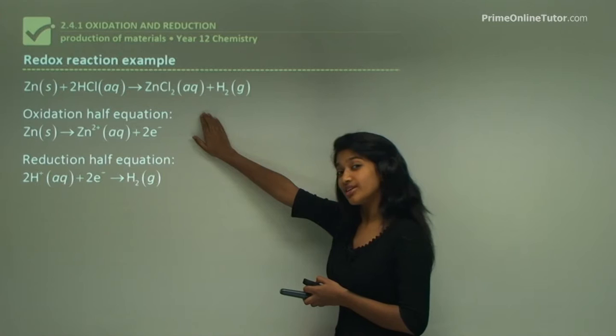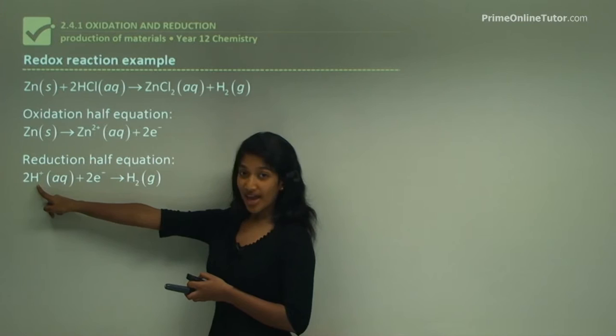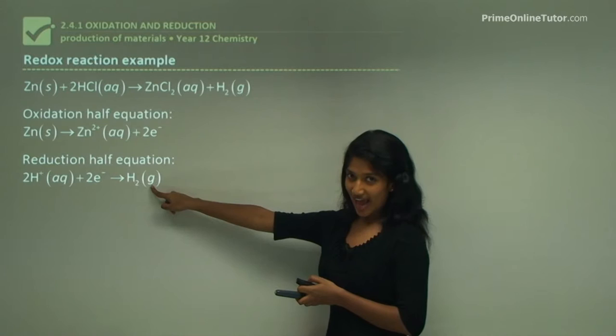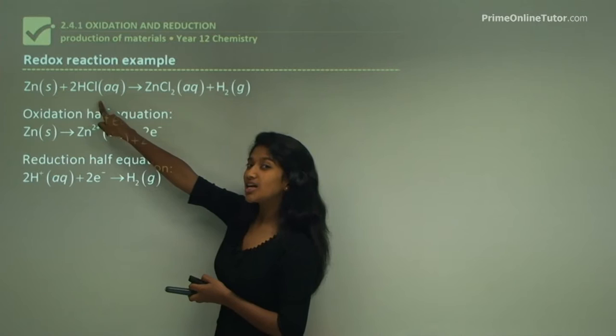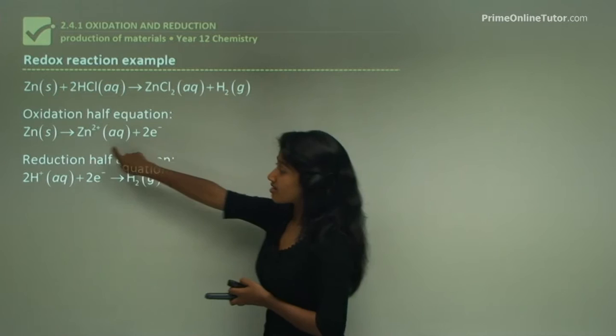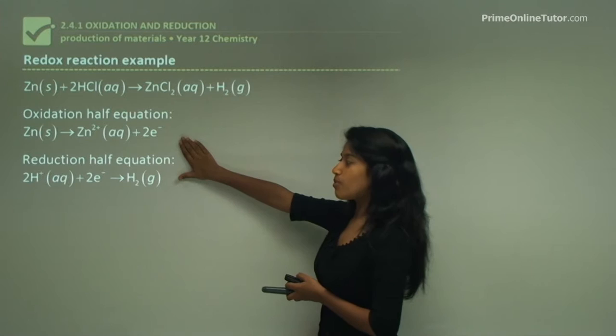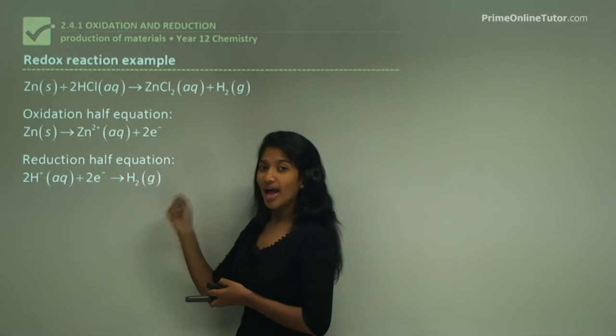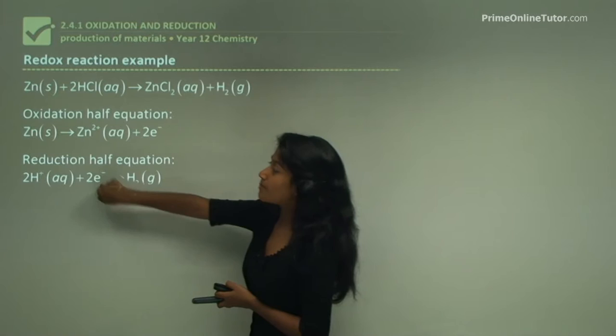In the reduction half equation, the H⁺ ion from hydrochloric acid in aqueous solution gains the two electrons from zinc to form hydrogen gas. It is very important to know that this electron doesn't come from a random place - it comes from the zinc. So the two electrons here belong to the zinc initially.